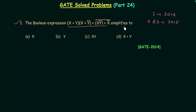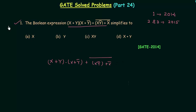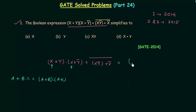The boolean expression simplifies to — this is the given boolean expression and we have to simplify it: (x OR y) AND (x OR y complement) OR (complement of x AND y complement) OR x complement. I will simplify this using laws of boolean algebra. From the distributive law, if there is a OR (b AND c), we can write it as (a OR b) AND (a OR c). Here x is common, so using the distributive law I will write x OR (y AND y complement).